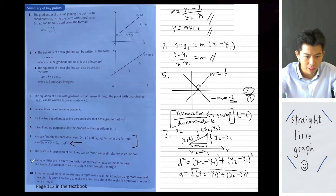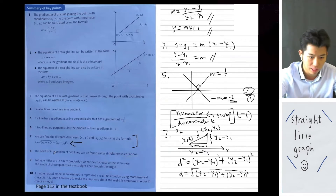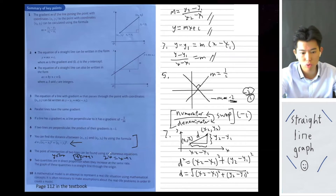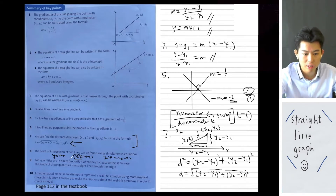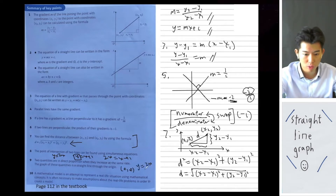For part 8, if two lines cross each other, use simultaneous equations to solve for x. For example, if y equals 2x and y equals x plus 1, substitute the first y into the second to get 2x equals x plus 1, then solve. For part 9, two quantities in direct proportion increase at the same rate, and their graph is a straight line through the origin — basically y equals kx, where when x is 0, y is also 0.